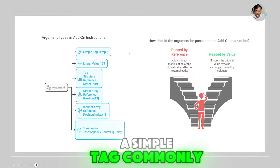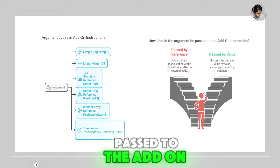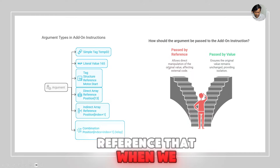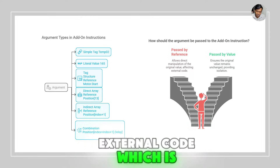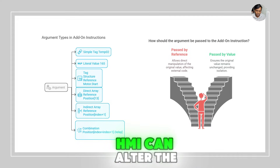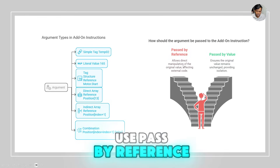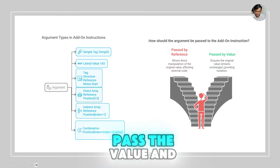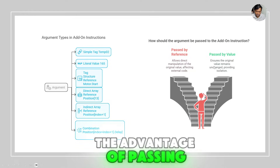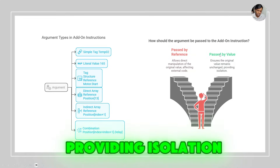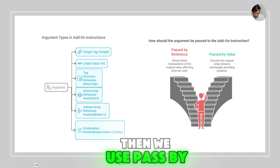Typically we use a simple tag. Now, arguments can be passed to an add-on instruction set by reference or by value. Passing by reference means the tag is available for external code — such as an HMI — to change, even before the AOI uses it, so you need to be careful. Passing by value means you just pass the value and the AOI acts on it. The advantage of pass by value is that the original value remains unchanged, providing isolation. If you don't want anyone else to change the value, use pass by value; otherwise use pass by reference.